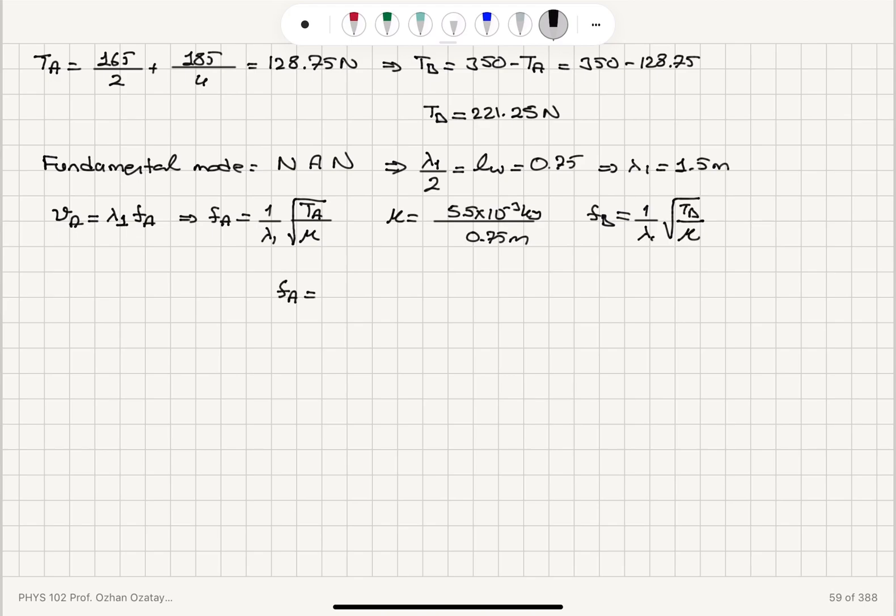So frequency on A is 1 over 1.5. Then we have mu which is 5.5 times 10 to minus 3 divided by 0.75. So 0.75 goes upstairs multiplied by tension 128.75 on wire A. And then we take the square root. So this frequency is 88.3 hertz.